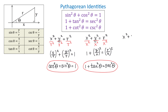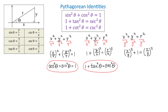Starting once more from x squared plus y squared equals r squared, this time we divide both sides by y squared. We get x over y all squared plus 1 equals r over y all squared. Since x over y is cotangent of theta and r over y is cosecant of theta, we get cotangent squared of theta plus 1 equals cosecant squared of theta. This is the third identity.